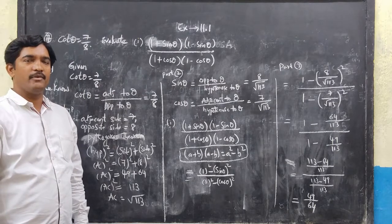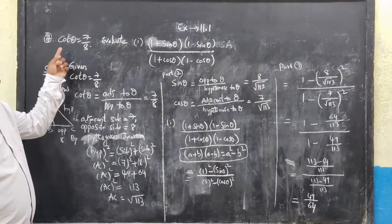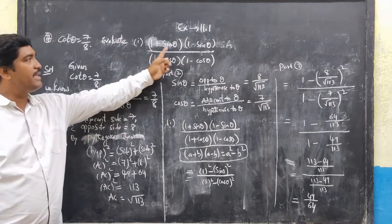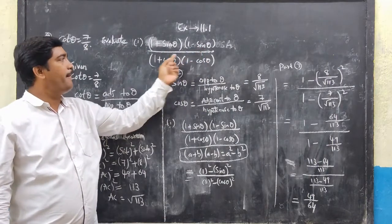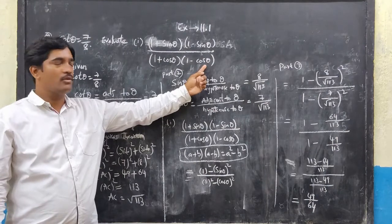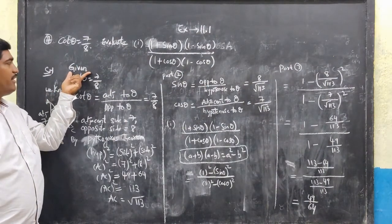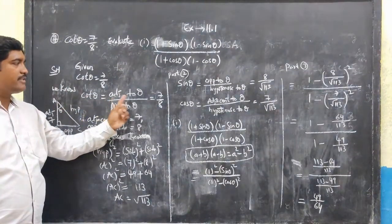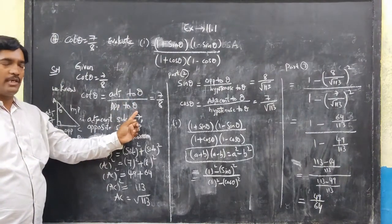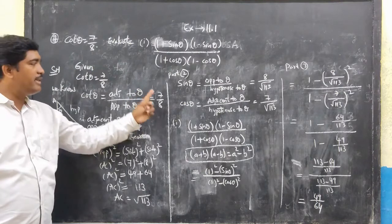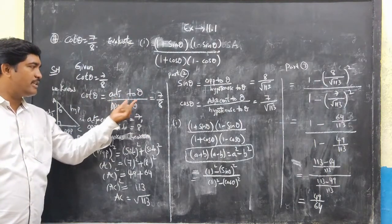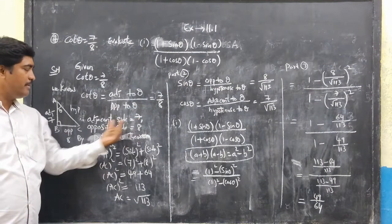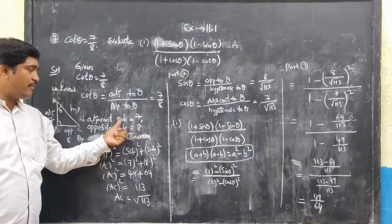We now look at the seventh problem of exercise 11.1. The problem states cot theta = 7/8. We know cot theta = adjacent to theta / opposite to theta = 7/8. From this, adjacent side = 7 and opposite side = 8.